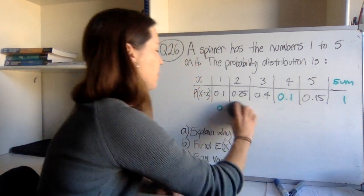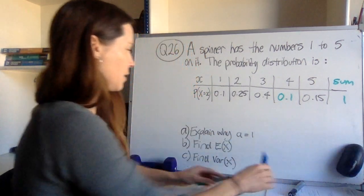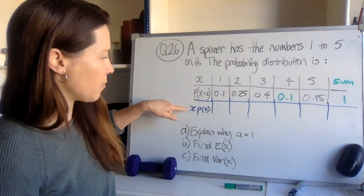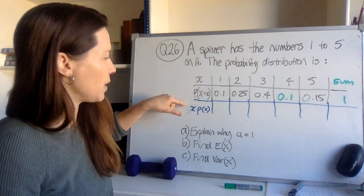Finding the expected value and the variance should be pretty straightforward. This is a procedure that you should know. Finding the expected value, easiest way to do it is to make another row and then multiply each score by its probability.